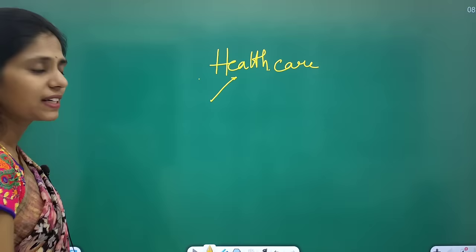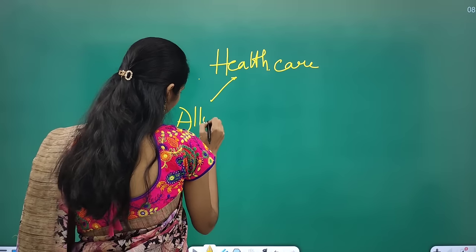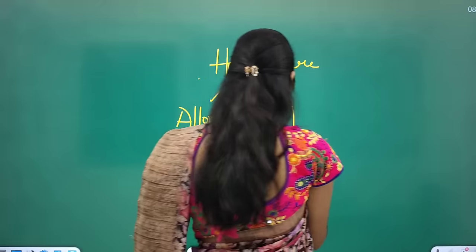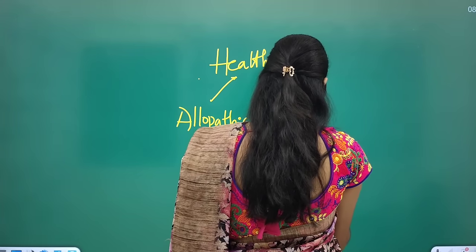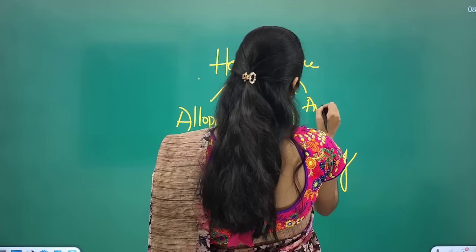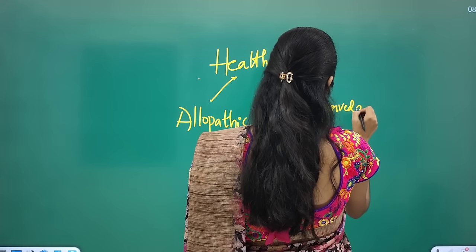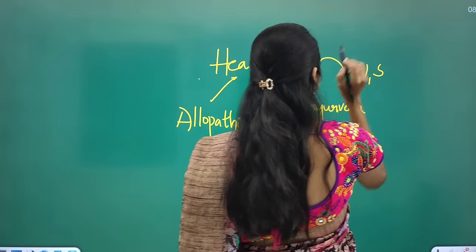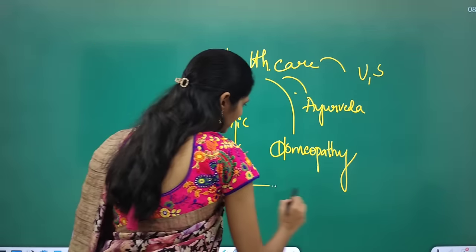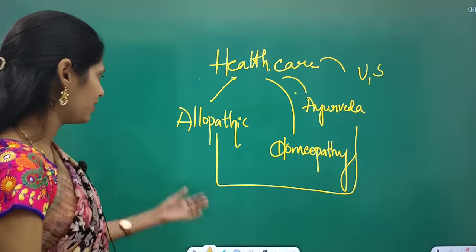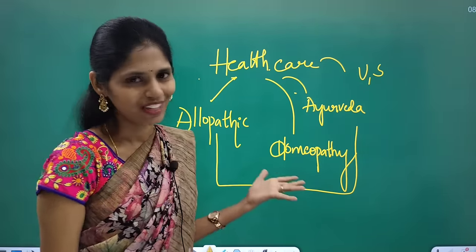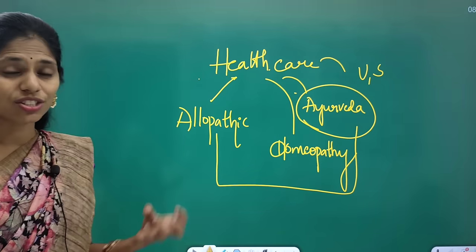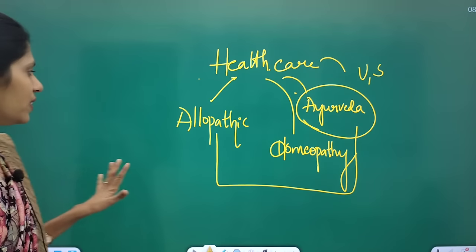If we talk about healthcare, we have different types in our country — allopathy, homeopathy, Ayurveda, and traditional systems like Unani and Siddha. Ayurveda deals with plants and plant extracts, homeopathy focuses on extracts, but normally we go for allopathic treatment. There are some diseases which do not have permanent cures in allopathy — only symptomatic treatment is given, such as painkillers for pain or fever-reducing drugs for fever.